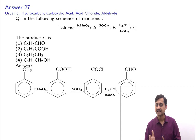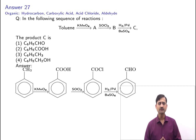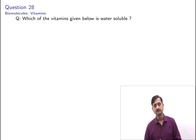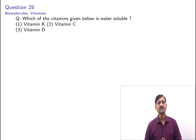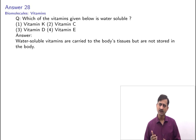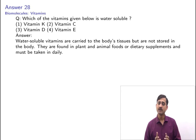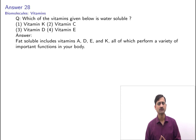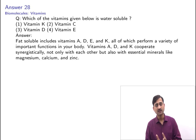The next question is from biomolecules, subtopic vitamins. Which of the following vitamins is water-soluble: Vitamin K, Vitamin C, Vitamin D, or Vitamin E? Water-soluble vitamins are not stored in the body and must be taken in daily. Vitamin C and members of the Vitamin B complex are water-soluble. Fat-soluble vitamins include A, D, E, and K. Hence, Vitamin C is the water-soluble vitamin.